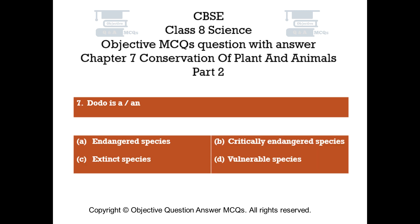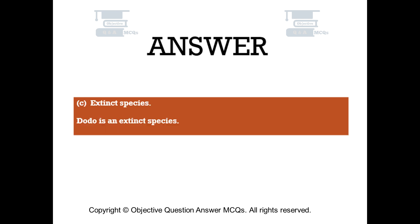Question number 7. Dodo is: Option A Endangered Species, Option B Critically Endangered Species, Option C Extinct Species, Option D Vulnerable Species. The right answer is Option C — Extinct Species. Dodo is an Extinct Species.